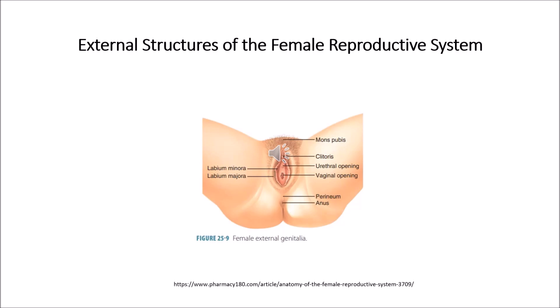Next are the ovaries. The ovaries are small, oval-shaped glands that are located on either side of the uterus. The ovaries produce eggs and hormones. The fallopian tubes are narrow tubes that are attached to the upper part of the uterus and serve as a pathway for the ovum to travel from the ovaries to the uterus.